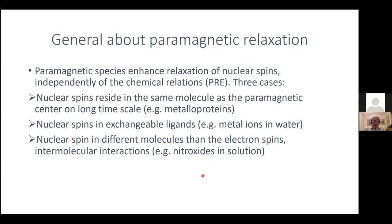There are a few general things about paramagnetic relaxation that I want to begin with. The paramagnetic species in solution affects the relaxation of nuclear spins basically independently of the chemical situation. We can mention three cases. The first is where the nuclear spin sits in the same molecule as the paramagnetic center on a long timescale — an example of this kind of system might be metalloproteins, where we have a paramagnetic ion sitting more or less permanently in the framework of the molecule.